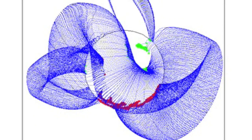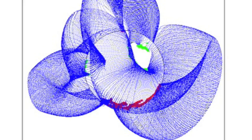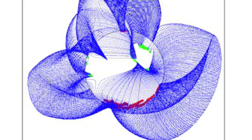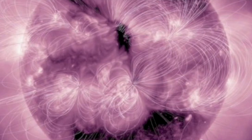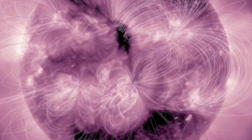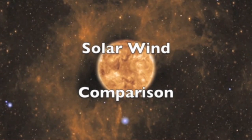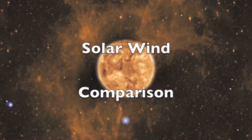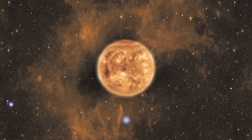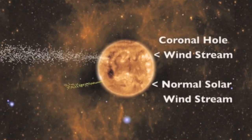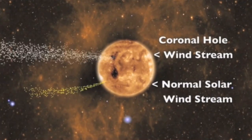Just like the umbral fields, coronal fields can push and maintain charged particles. Where there are no fields arching over the surface, we find the coronal holes. These are areas where the forces controlling the charged particles extend out into space, rather than arch back down to the sun.